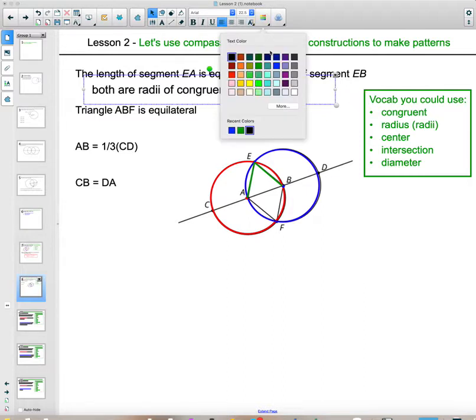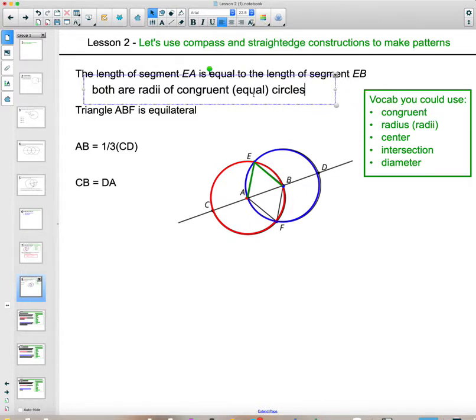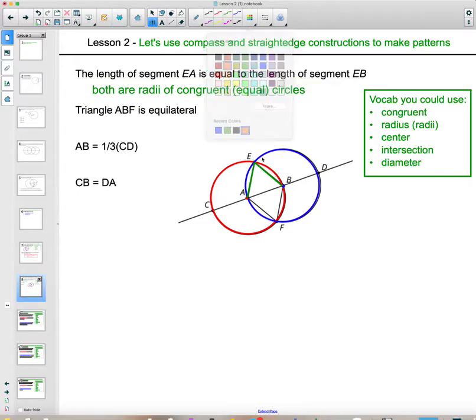I'm just going to type this out here. They both are radii of congruent, remember congruent means equal, circles. Then next one. How do we know that ABF is equilateral? How do we know that triangle ABF is equilateral?